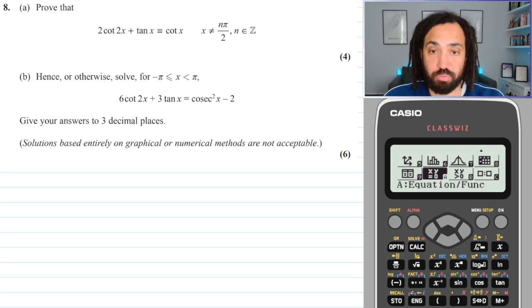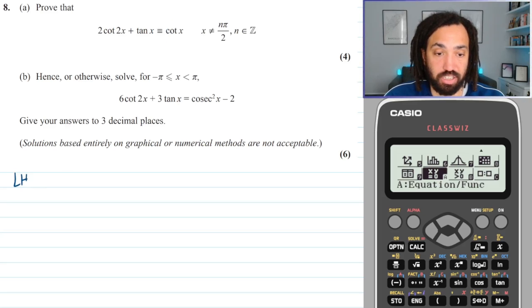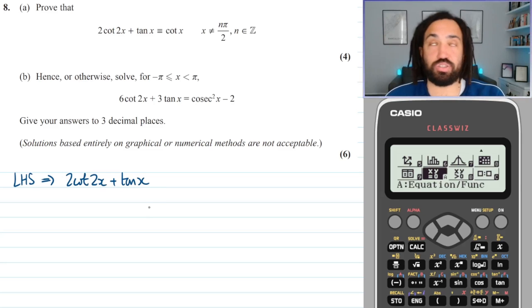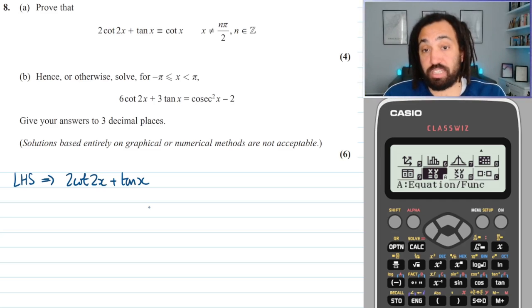Okay, so the first thing is we are trying to prove an identity which is very different to solving the equation. So what we need to do is just write out the left hand side or the right hand side. In this case I'm going to go with the left hand side because it's just more substantial, and then we need to convert it and rewrite it into the same as the right hand side. We're not adding or subtracting things from one side of the identity, we're just picking one and we're just trying to recreate the other.